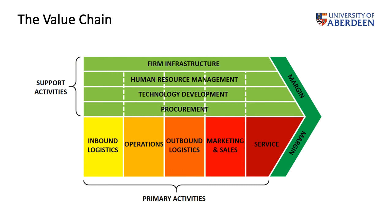There are things that support the primary activities, like infrastructure, human resources, and technology. These support activities generally have nothing to do with day-to-day operations. As you can see, the dark green represents the difference between all the costs and all the revenue. The activities that have to do with developing the business are the primary activities, and the ones that support the business are the support activities — as simple as that.